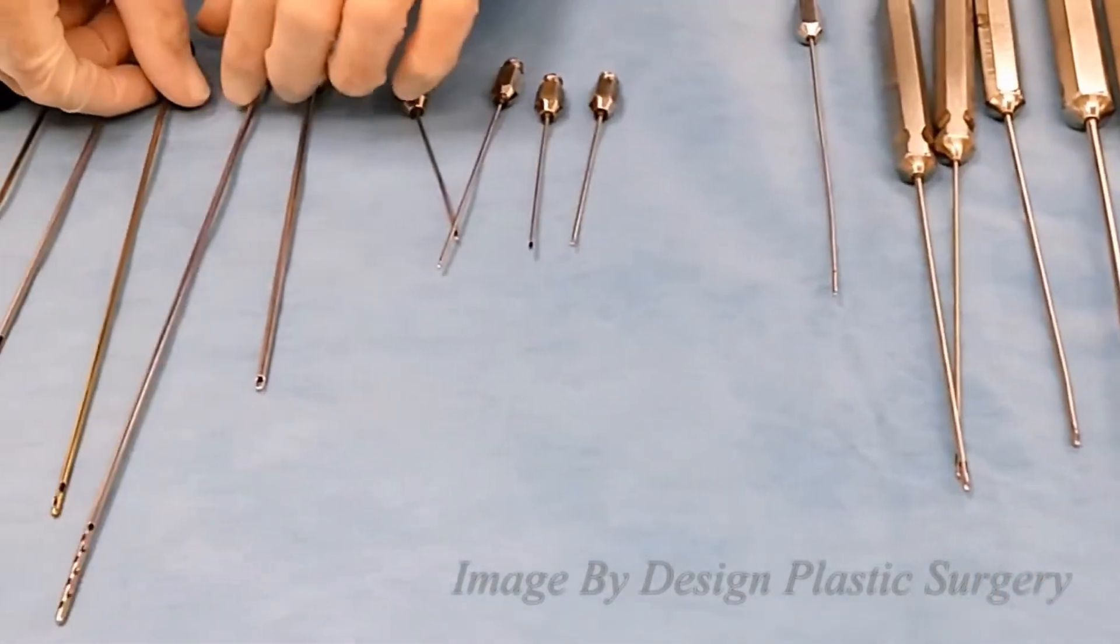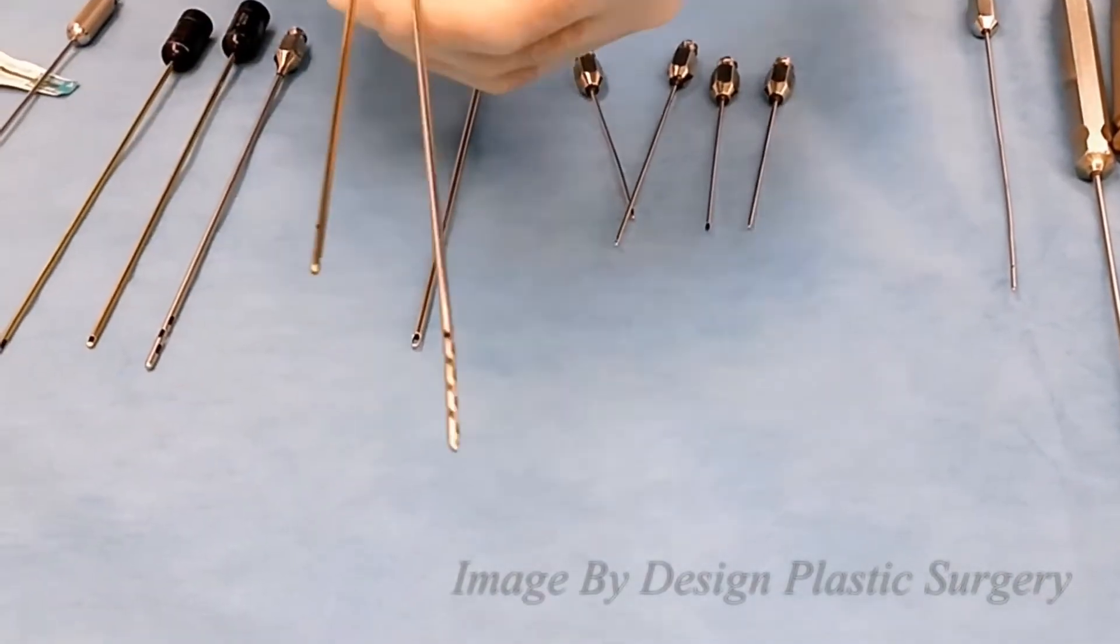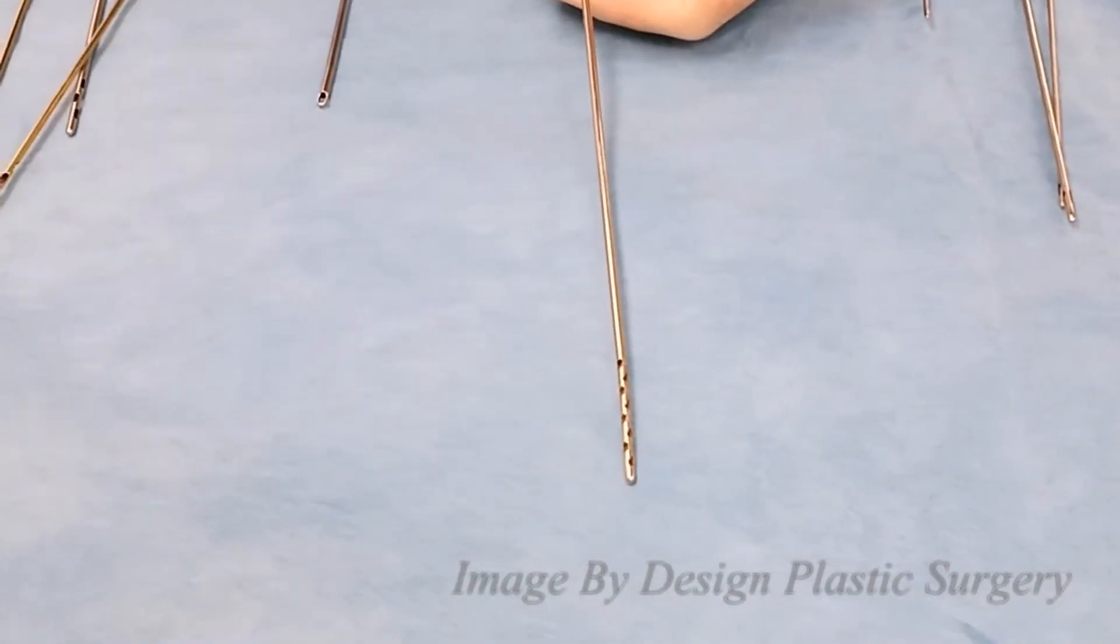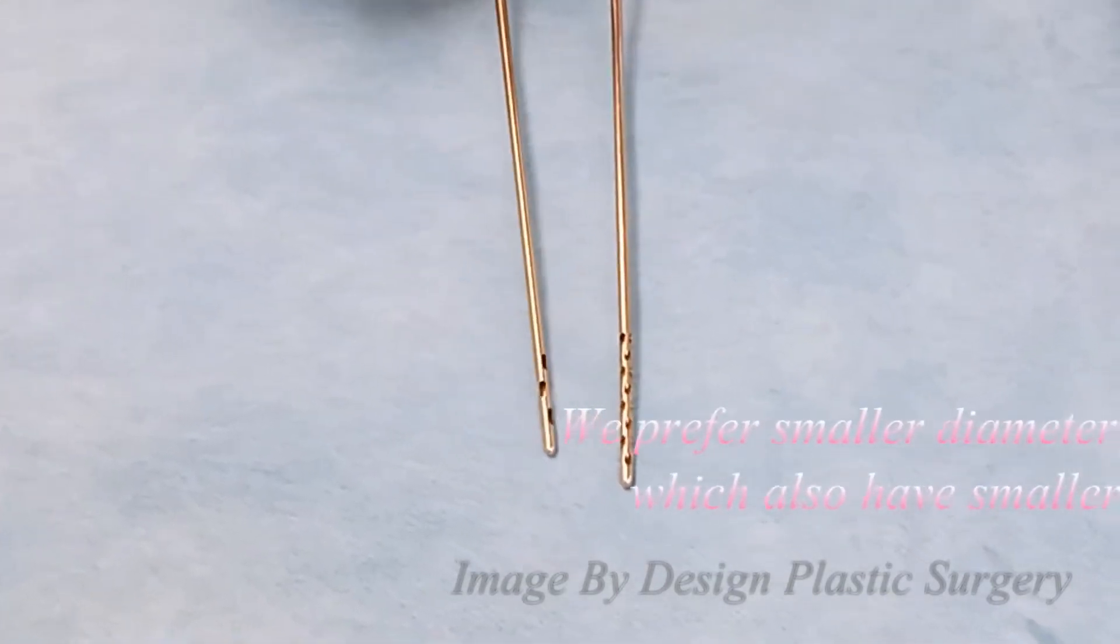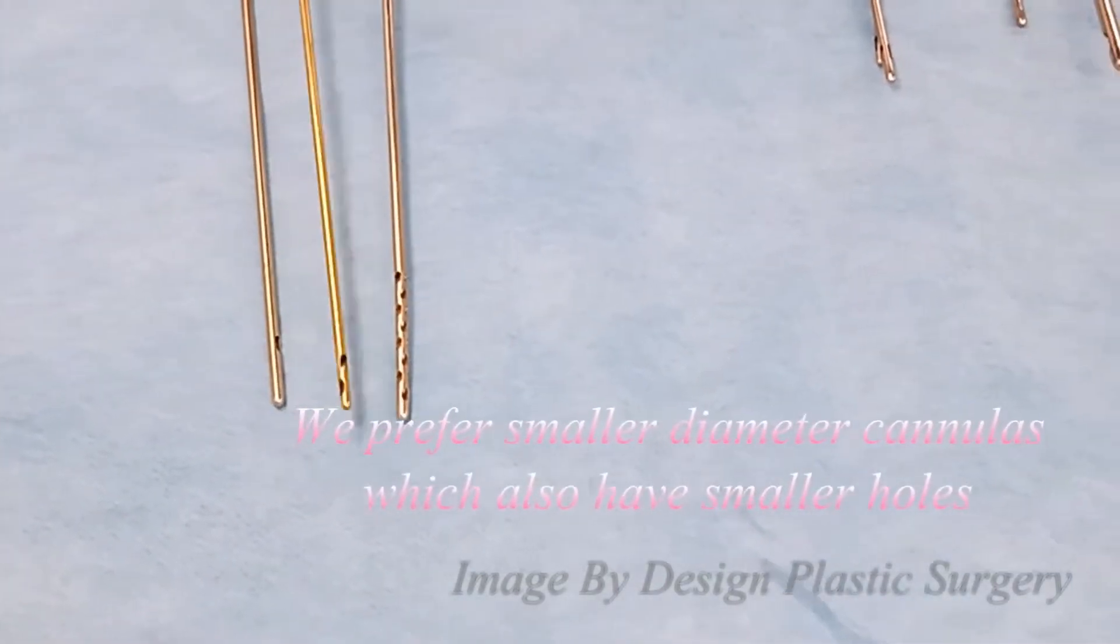And then you can see the difference with the harvest cannulas for fat. These have, you can see, multiple holes. This helps to increase the amount of fat that we're removing.